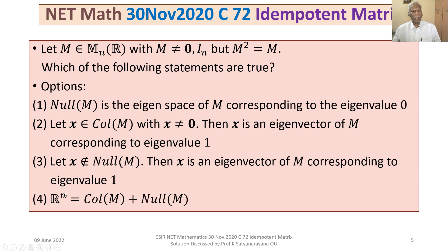Option 4: ℝⁿ is equal to the column space of M plus the null space of M.